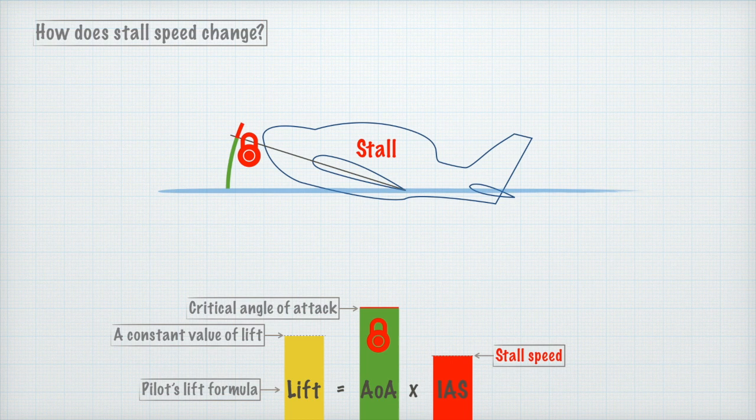Anything that requires the aeroplane to generate more lift increases the stall speed. For example, more weight will require more lift. For the formula to remain balanced, more lift equals higher stall speed. Can you think of anything that would reduce the stall speed?